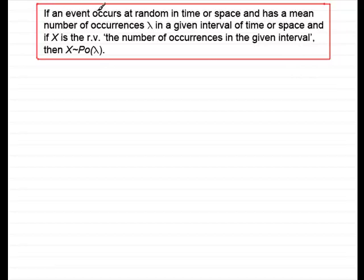If an event occurs at random in time or space and has a mean number of occurrences lambda in a given interval of time or space, and if X is the random variable, the number of occurrences in the given interval, then X follows a Poisson distribution with mean lambda. We write X follows Po(λ). The Poisson distribution is described by one parameter, the mean lambda.